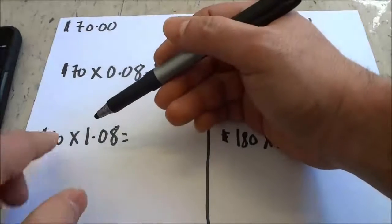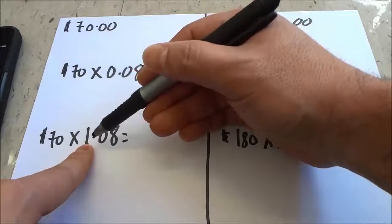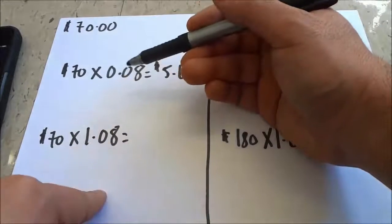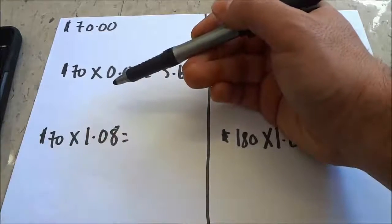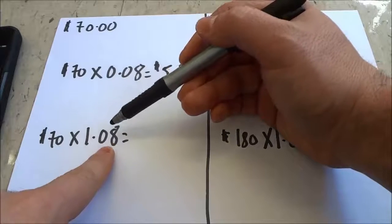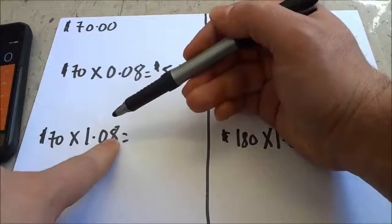All you have to do is multiply the price of the product by 1. and then the sales tax percentage. Once again, it's 1.08 because we're imagining we're using an 8% sales tax.